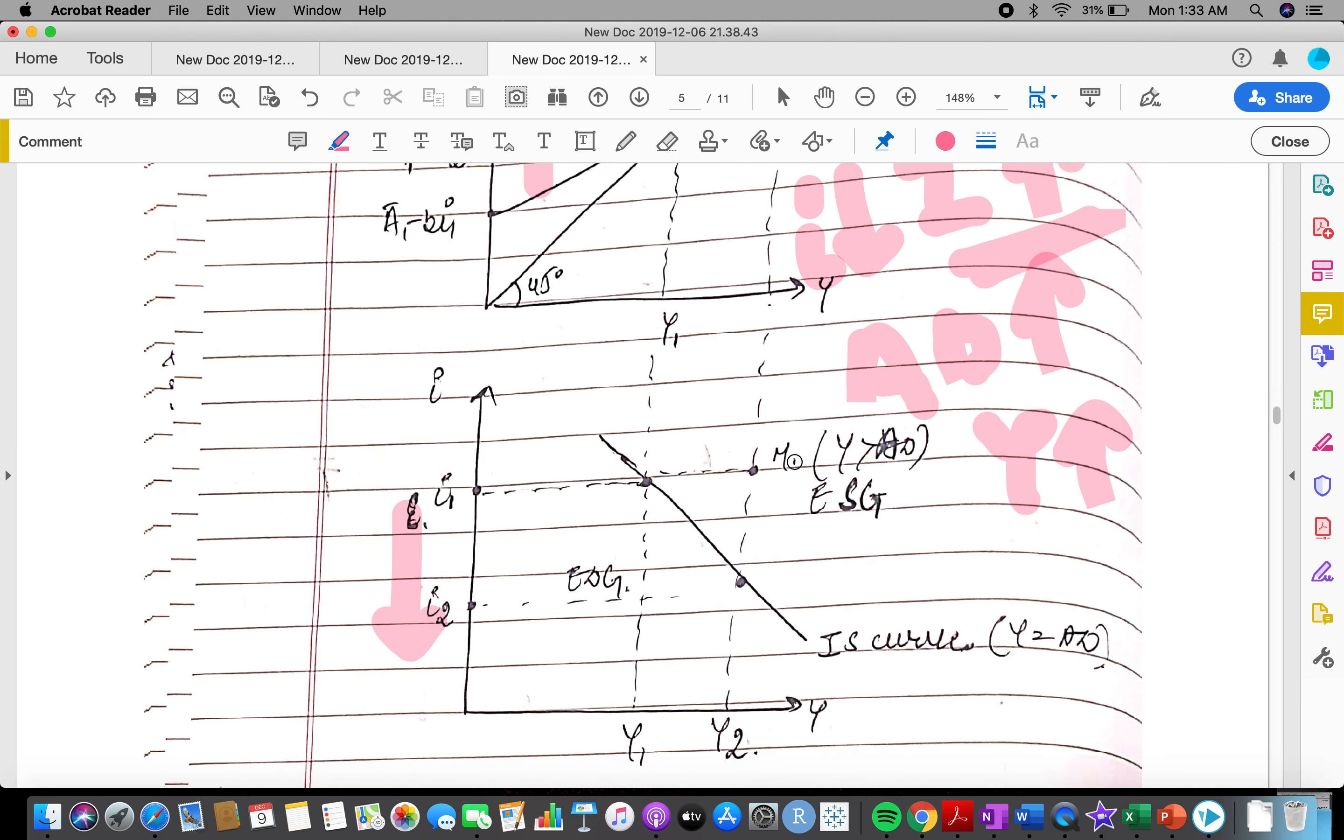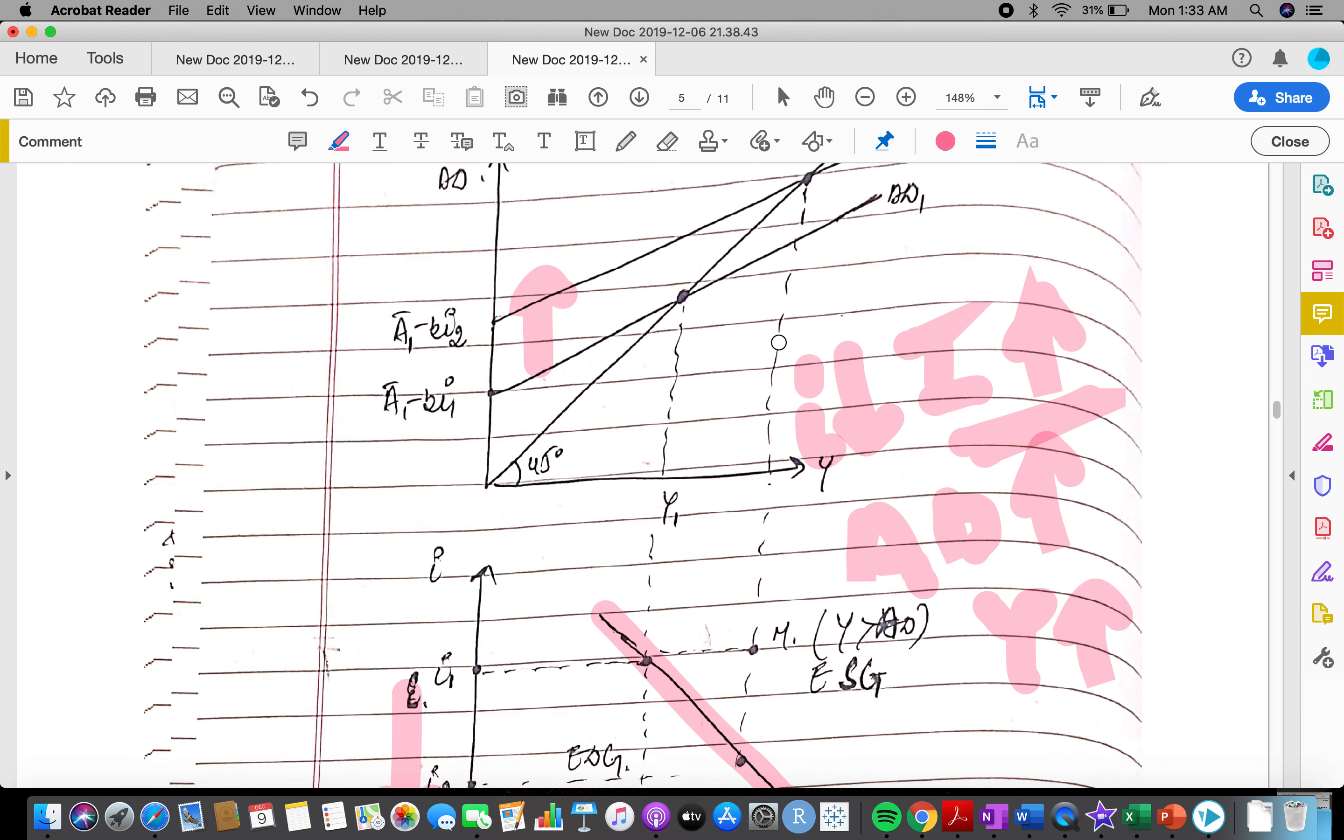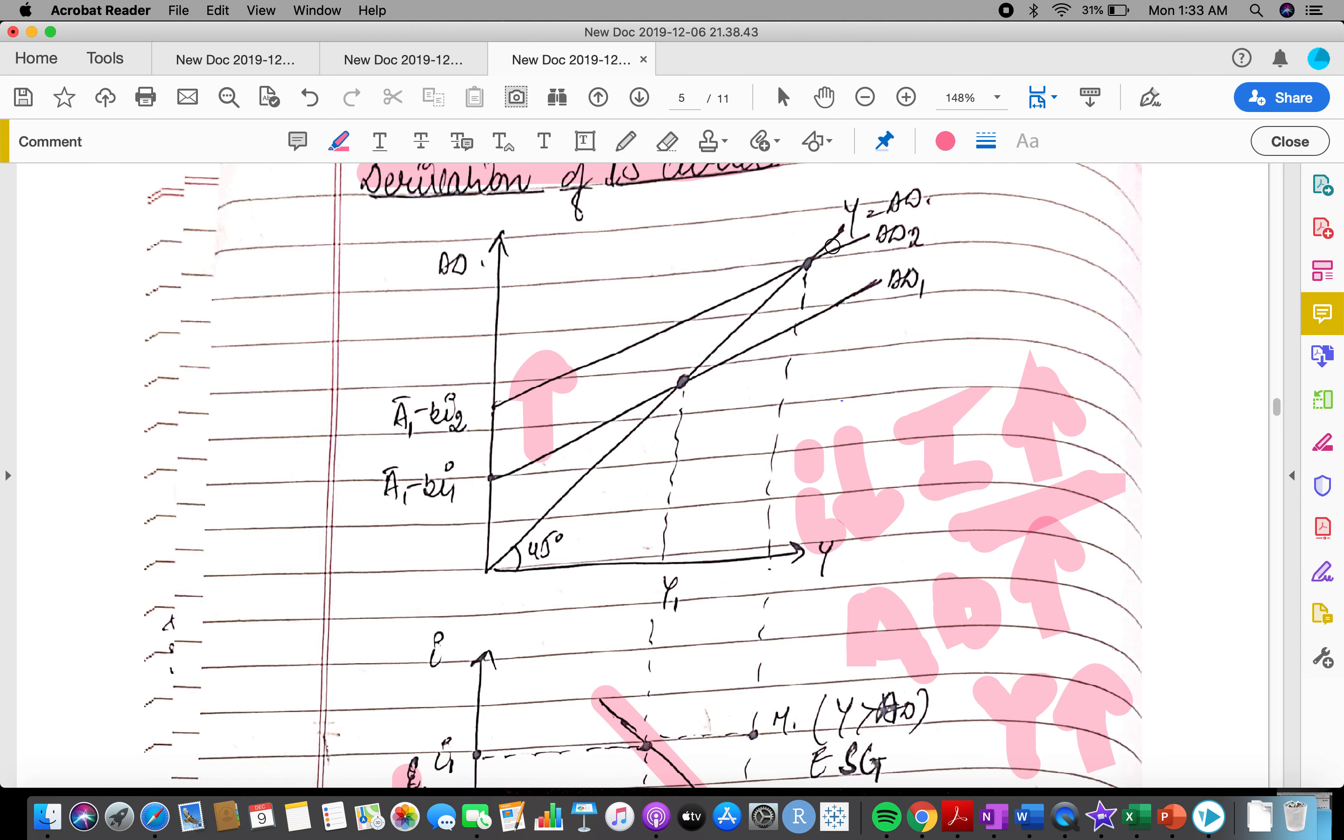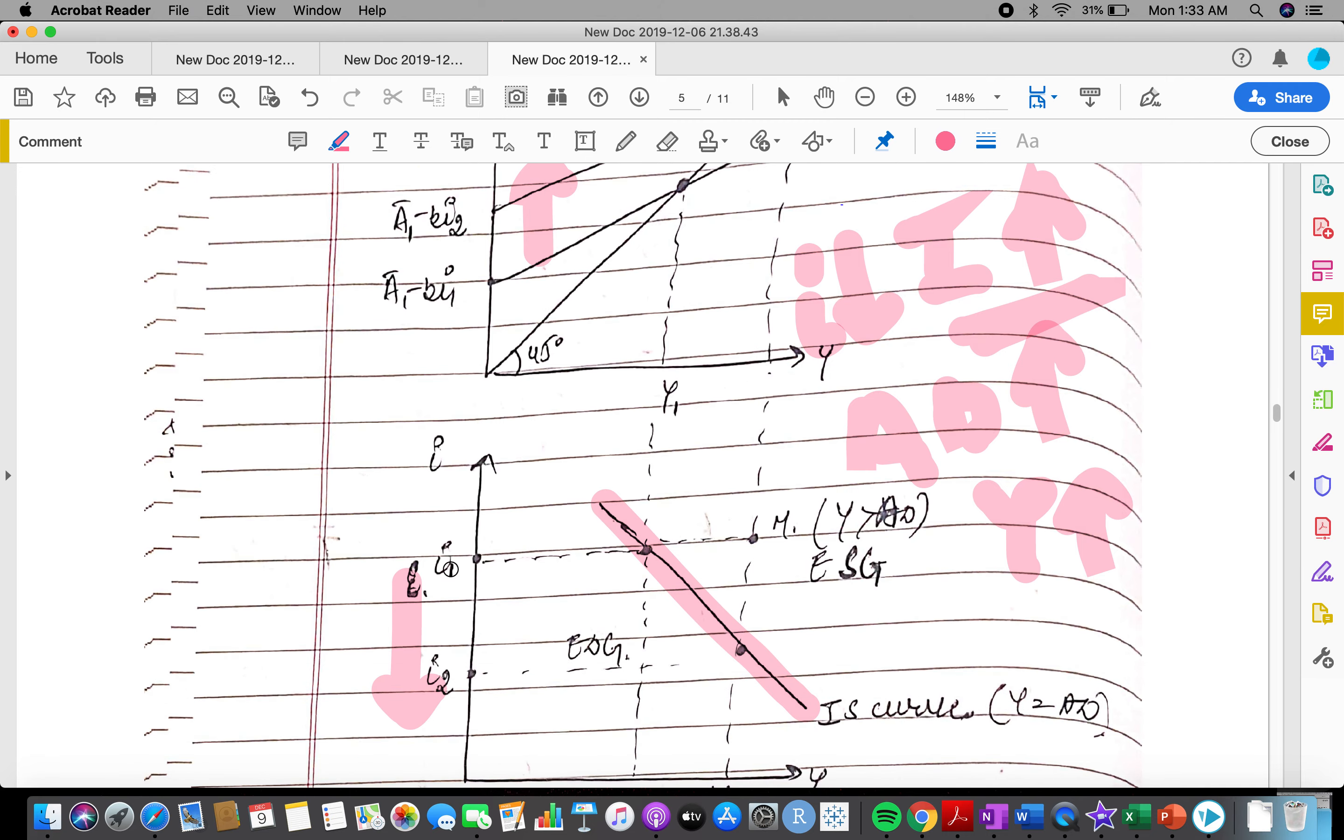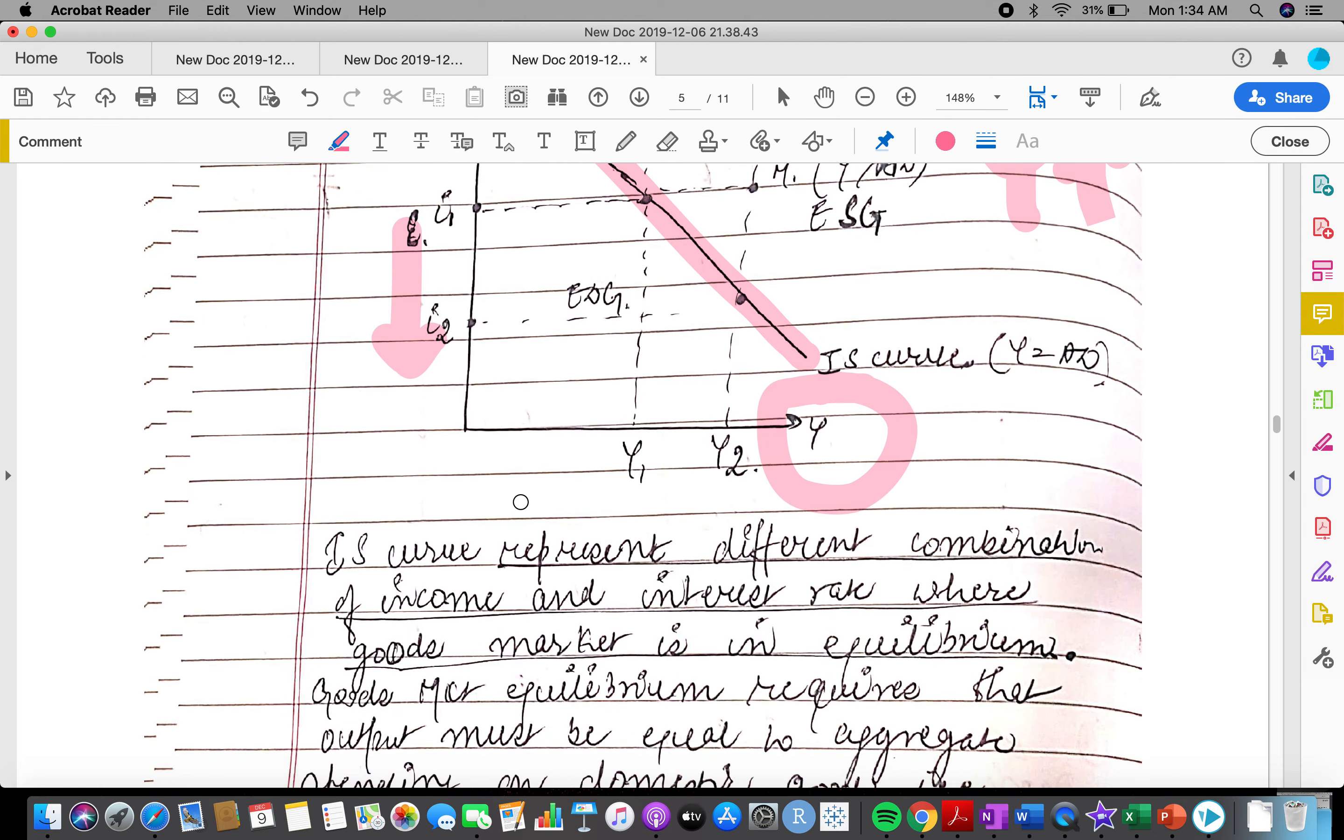We'll see that output would increase, so we'll be deriving IS curve from the above AD curve. Then there will be shift in investment due to which AD shifts upward. We'll see a negative relation that exists between interest rate and output.